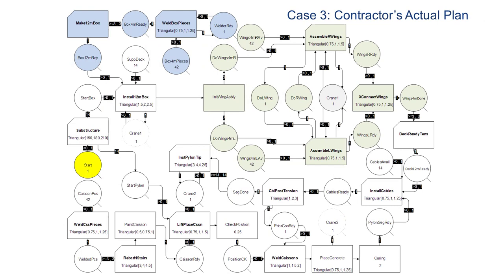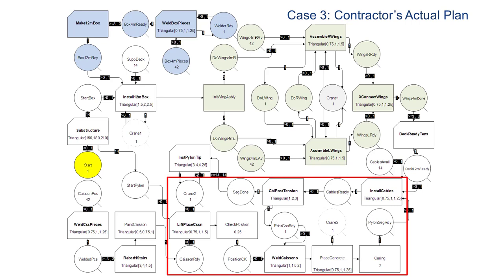The Easy Strobe model for Case 3 shows the actual construction plan followed by the contractors. The construction of the deck is similar to Case 2, but the pylon uses prefabricated steel caissons instead of sliding formwork. The Easy Strobe model corrects the corresponding Cyclone model in two important ways. The major mistake in the Cyclone model for Case 3 is that it allows the crane to start lifting all 14 steel caissons sequentially without prerequisite conditions, allowing them to float unsupported in the air while waiting to be welded. The second mistake was that the crane does not support each caisson while it is being positioned and welded to the previous one. These mistakes were corrected in the Easy Strobe model by adding several new queues and links.